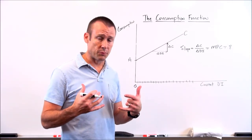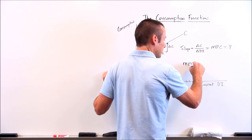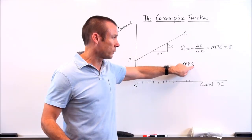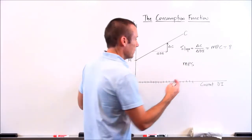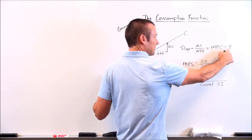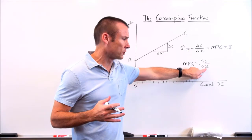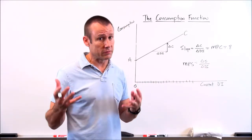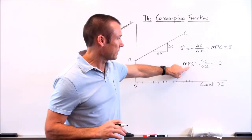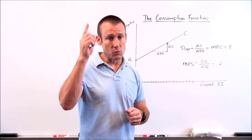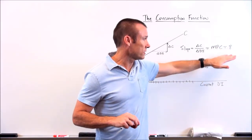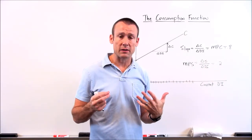This also brings us to another important expression: the marginal propensity to save (MPS). Marginal is still pointing out for one more dollar in income, what is the percentage we would likely take towards savings? This is delta savings over delta DI. If the MPC is 0.8, since there are only two things we do with disposable income — we either spend it or save it — the MPS is going to be 0.2, because MPS plus MPC must equal one. For every one dollar of disposable income, 80% goes towards consumption and 20% towards savings.